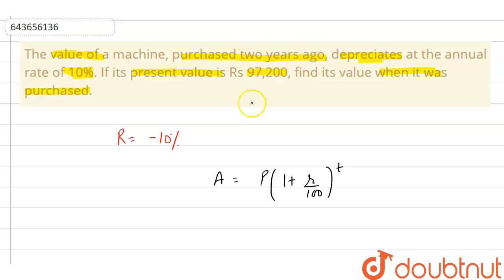As given in the question, the machine was purchased two years ago, so the time period is 2 years. If its present value is 97,200, that means our amount is 97,200. We have to find the value of P, which is the value of the machine when it was purchased.